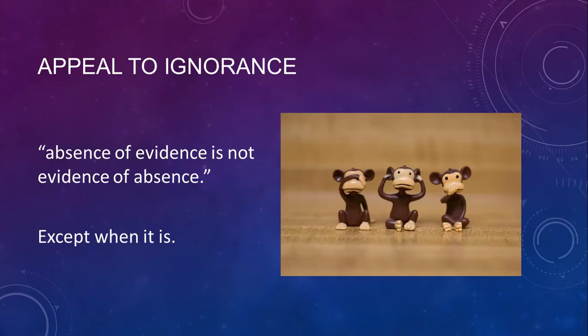Appeal to ignorance. The slogan is: absence of evidence is not evidence of absence — with the proviso, except when it is. The problem is separating out when appealing to the lack of evidence is legitimate. The structure of the argument is: there is no evidence to show this thing, therefore that thing doesn't exist. Often that's a fallacy — but sometimes it's not.